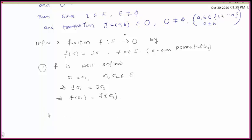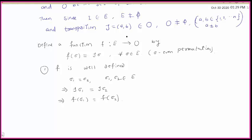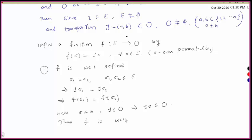Since σ belongs to E and τ belongs to O, τσ is a unique odd permutation belonging to O. Thus f is a well-defined function.